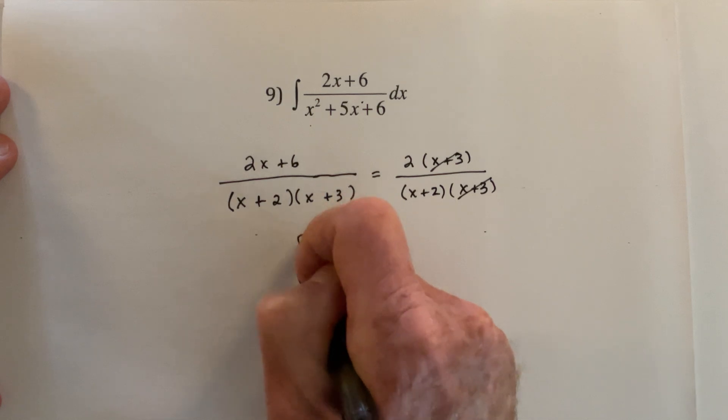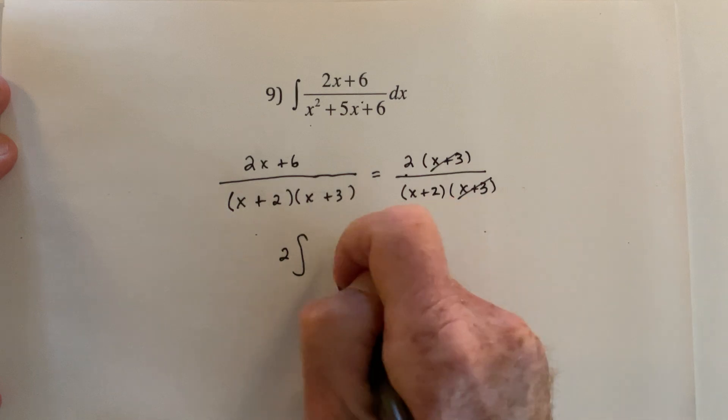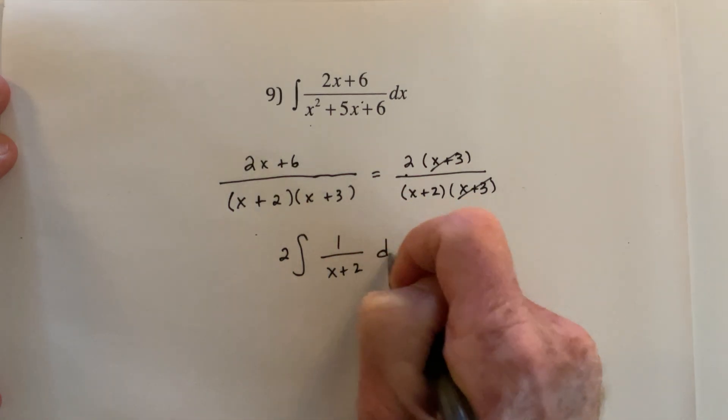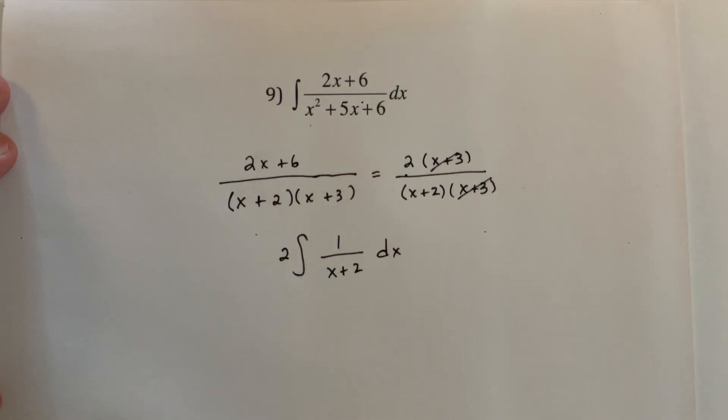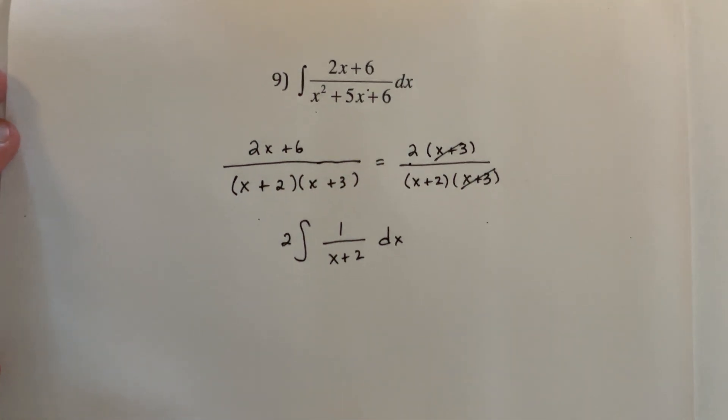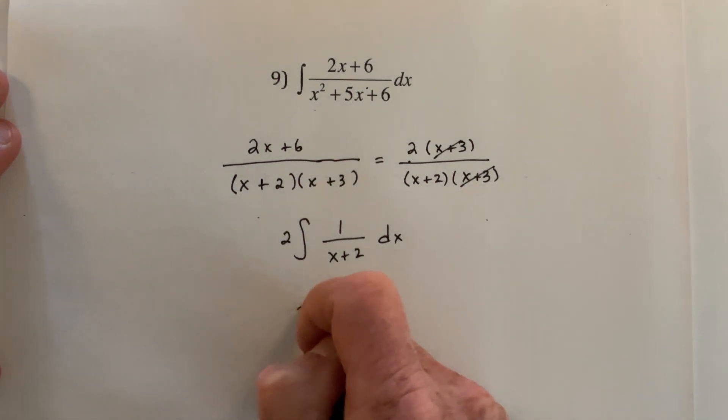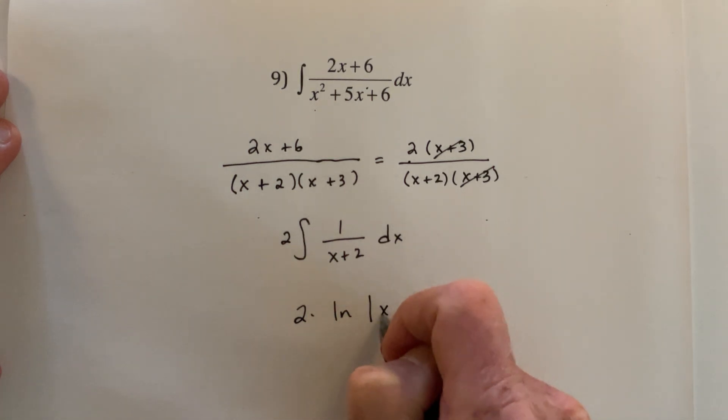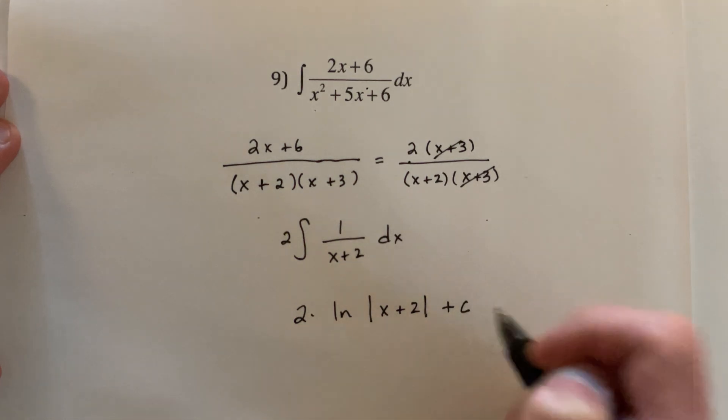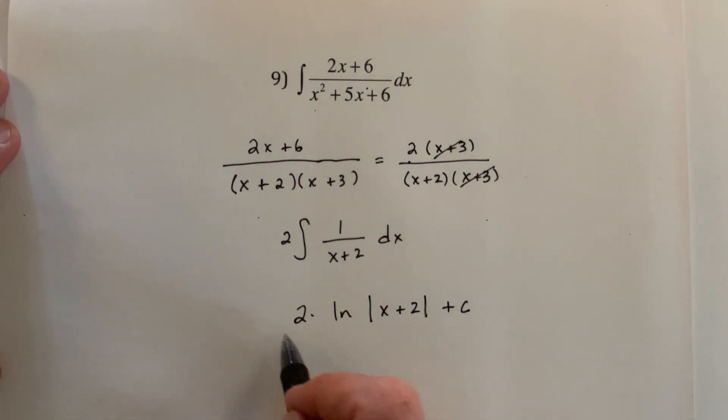And then it's going to be integrate, and I could factor out this 2, 1 over x plus 2 dx. And that's very much like just having 1 over x. It's going to be natural log, so 2 times the natural log. Technically you're supposed to put absolute value. Many times I forget, but I had my coffee this morning so I remembered to put the absolute value.